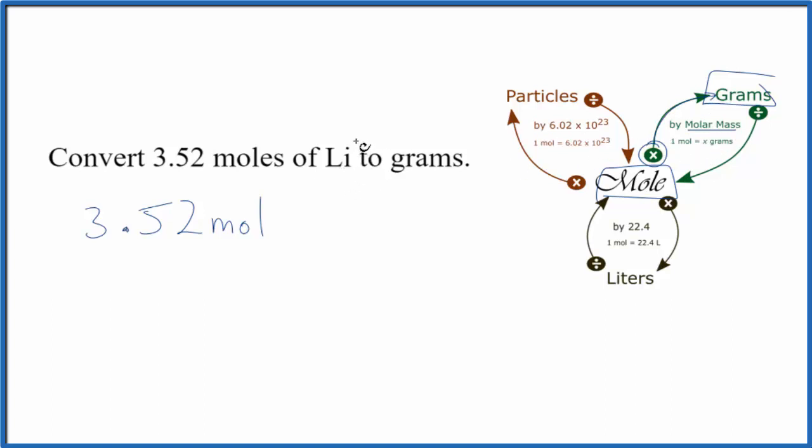So we go to the periodic table and we look up the atomic mass of lithium. Lithium has an atomic mass or molar mass of 6.94 and the units are grams per mole. So one mole of lithium is going to be 6.94 grams.